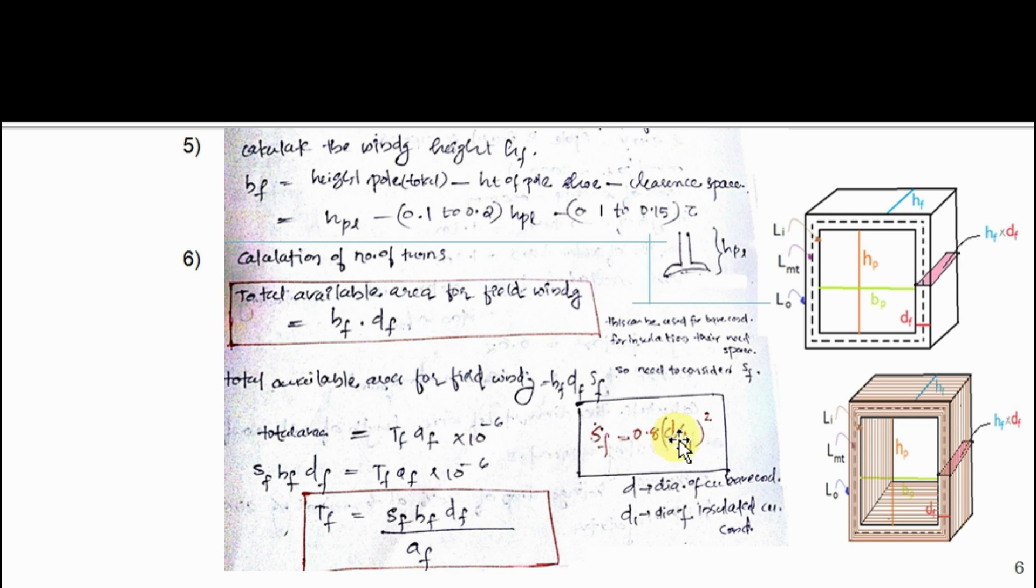There is another equation for total area: area of cross-section of one turn times total number of turns. Equate these two equations, then we will get the equation for number of turns.